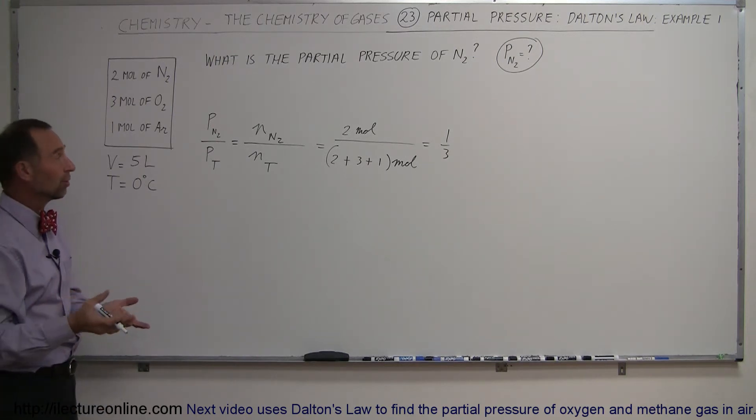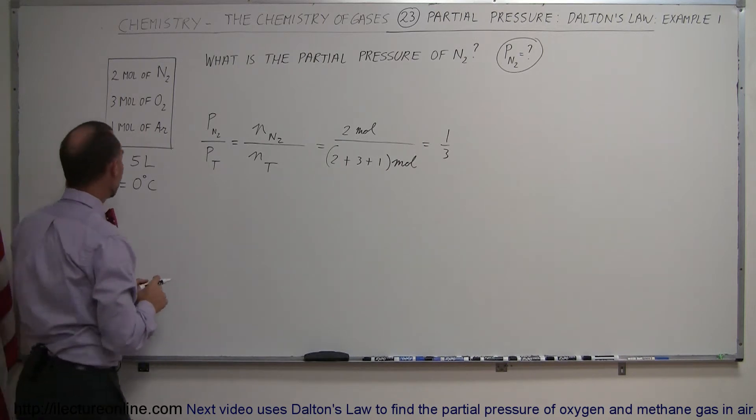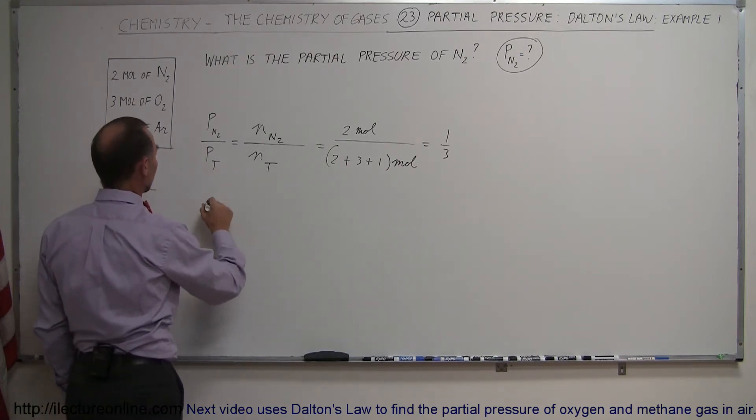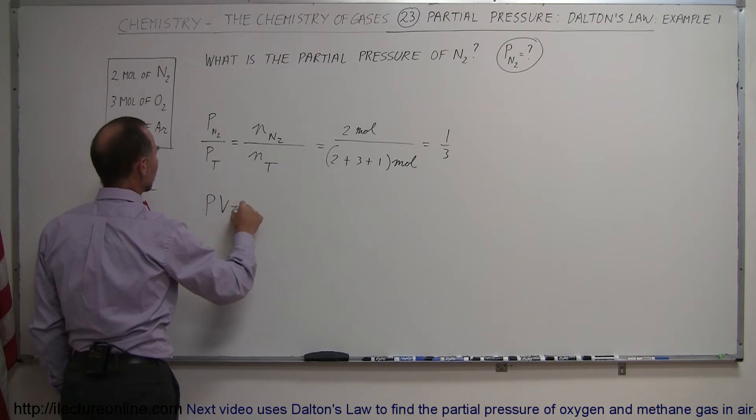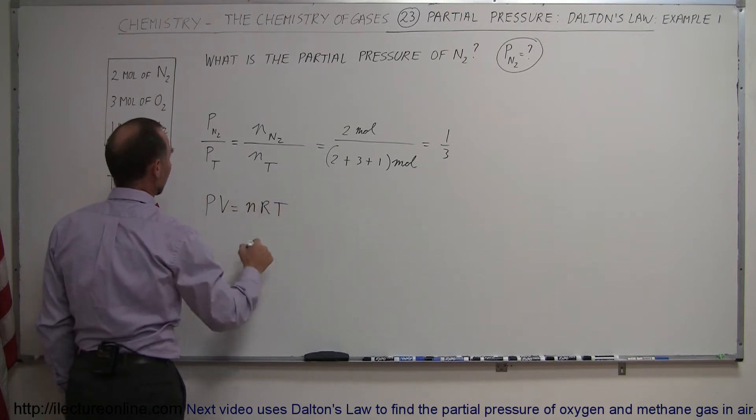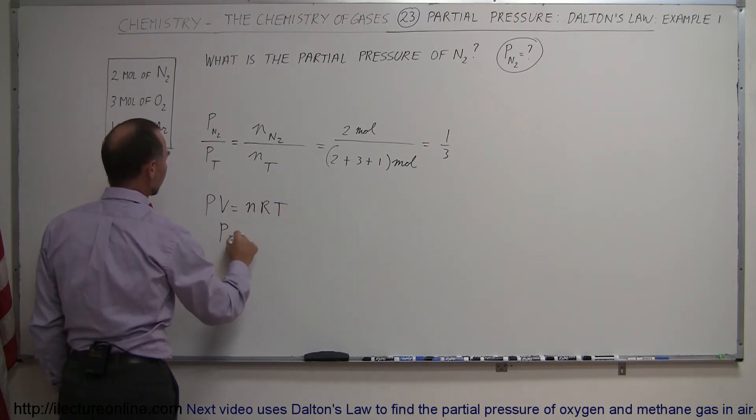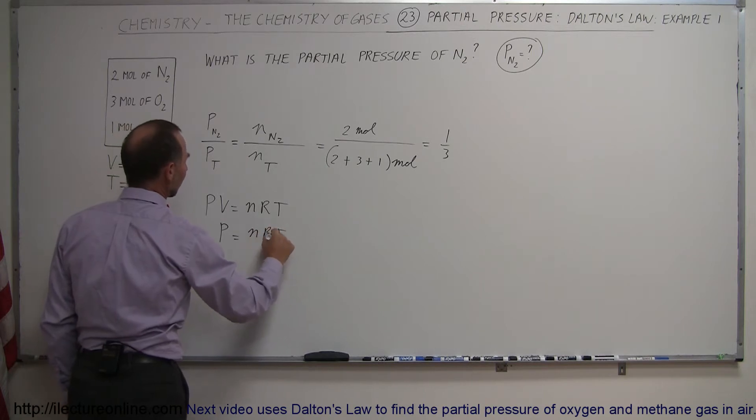Now, we still need to figure out what the total pressure is before we can figure out the portion belonging to nitrogen. All right, let's see here. Total pressure. Let's use PV equals NRT. And so, therefore, the total pressure is equal to NRT divided by the volume.